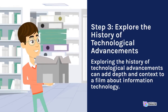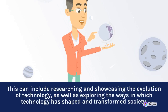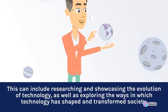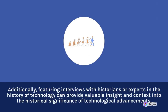Exploring the history of technological advancements can add depth and context to a film about information technology. This can include researching and showcasing the evolution of technology, as well as exploring the ways in which technology has shaped and transformed society. Additionally, featuring interviews with historians or experts in the history of technology can provide valuable insight and context into the historical significance of technological advancements.